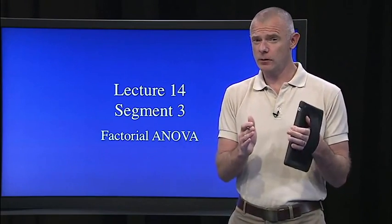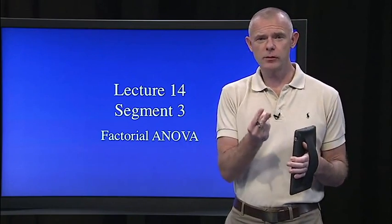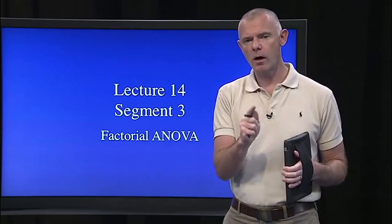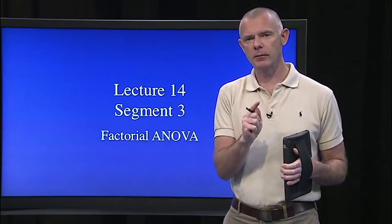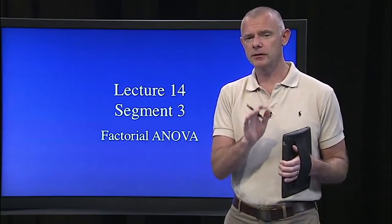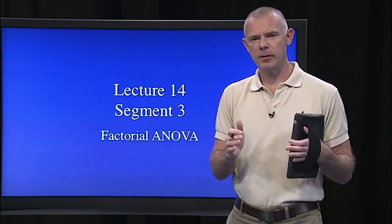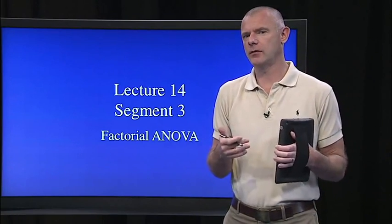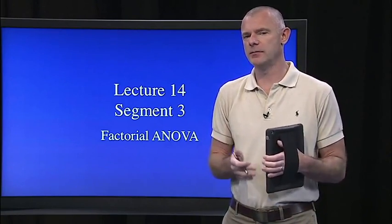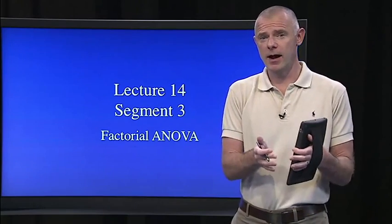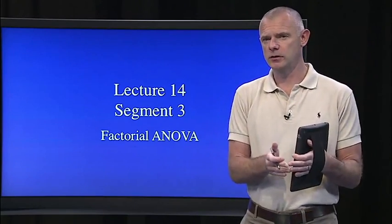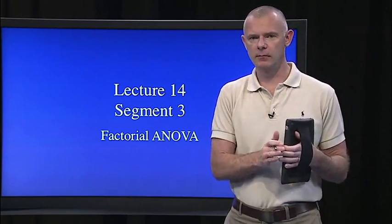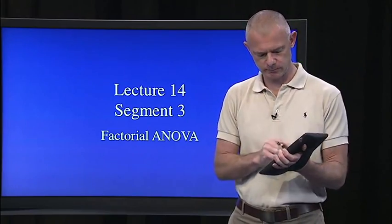In a factorial ANOVA, we have two independent variables, still just one dependent variable, and it's continuous. But now we have two independent variables, and we can test for hypotheses about interaction, which is like the moderation analyses we did in multiple regression.